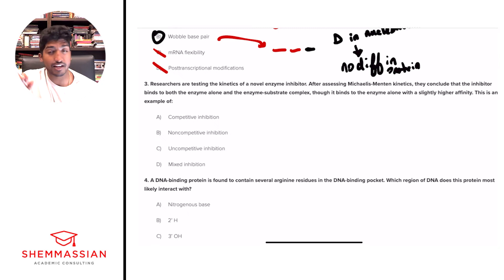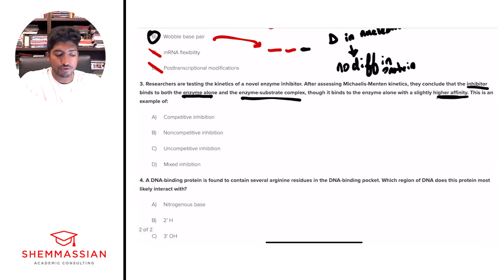Okay, so inhibition, enzymes, kinetics, very, very high yield topics on the MCAT. Please, please, please go study them. Very, very important. But right away, we're looking at the question and we see that this enzyme is inhibited both at the enzyme and enzyme substrate complex level, but there's a different affinity in this. So the enzyme is interacting with both, but one of them better. And so right away, we should note that if it's binding to both, right, the enzyme and the enzyme substrate complex, it's a specific type of class of inhibition. If it binds to one better than the other, it has a specific type of inhibition called mixed inhibition. But we'll go through this one by one right now.